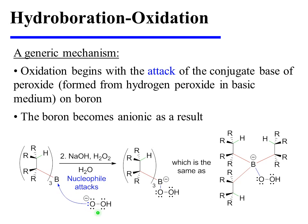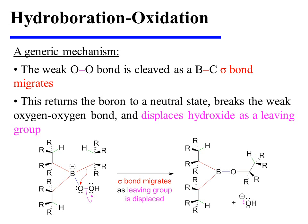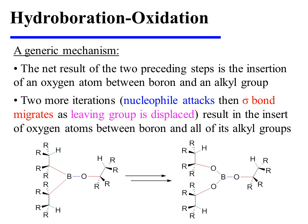Oxidation begins with the attack of the conjugate base of peroxide on boron, causing boron to become anionic. The product of this first mechanistic step may be drawn with the three substrate molecules grouped parenthetically or drawn out individually. In the next step, the weak oxygen-oxygen bond is cleaved as a boron-to-carbon sigma bond migrates to the oxygen, returning boron to a neutral state and displacing hydroxide.